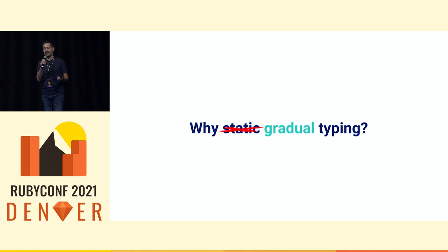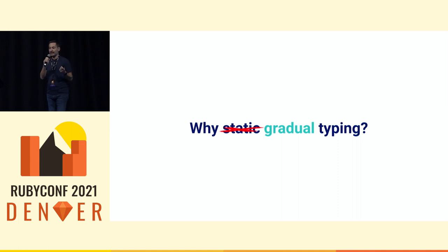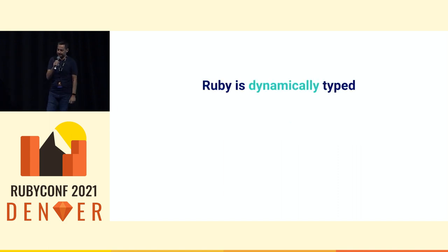Before we go into that, I want to talk a little bit about gradual typing. A lot of the conversation in Ruby today is centered around static typing, but we would like to call it gradual typing instead of static typing for a few reasons.